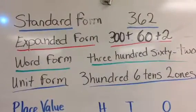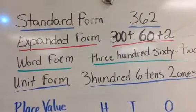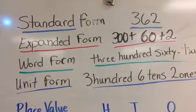Expanded form takes each number and writes the total value that it's actually worth, and then adds it together. 3 becomes 300, 6 becomes 60, 2 would stay at 2.